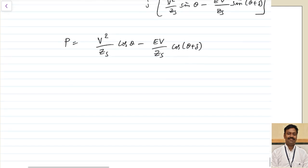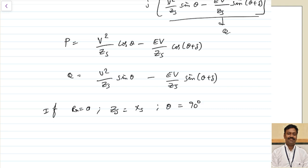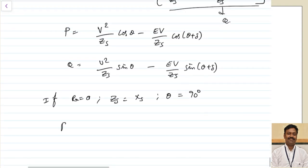Similarly, the reactive power Q = (V²/Zs)·sin θ − (EV/Zs)·sin(θ + δ). We will use this in future classes. Now, in practice, the resistance R is far less than Xs, so R ≈ 0. This means Zs = Xs and the impedance angle θ = 90°. Substituting: cos 90° = 0, cos(90° + δ) = −sin δ, and sin(90° + δ) = cos δ.